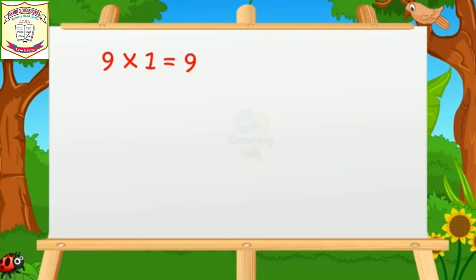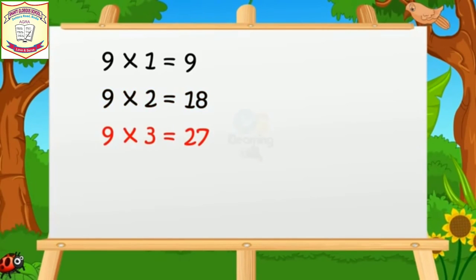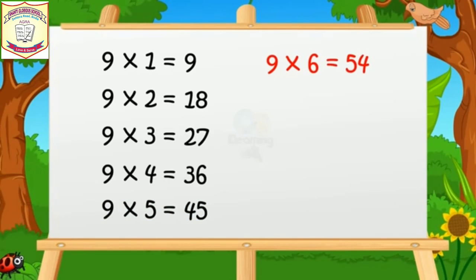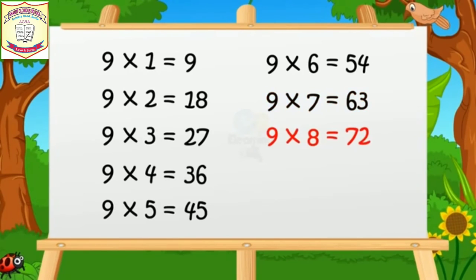Nine ones are nine. Nine twos are eighteen. Nine threes are twenty-seven. Nine fours are thirty-six. Nine fives are forty-five. Nine sixes are fifty-four. Nine sevens are sixty-three.